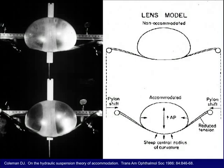This can easily be shown with a simple model accompanying the free body diagram. If we support a lens model — in this case a water-filled balloon — on saran wrap supported by two pylons, simply by moving the pylons together, which is a model of the constrictive effect of the ciliary body, we can get exactly the same lens shape: a steeper radius of curvature anteriorly, a narrowed cross-sectional diameter, and a thickened front-to-back lens.